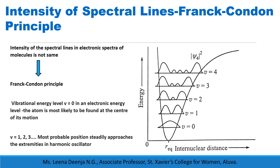Here is the Morse curve. We can see the probability of finding the atom in different vibrational energy levels. The vibrational energy levels are marked as V equal to 0, V equal to 1, V equal to 2, V equal to 3, and V equal to 4. The probability densities of finding the atom at a particular energy level are shown as modulus of psi squared versus internuclear distance. We can see that this probability gradually increases, reaches a maximum at the equilibrium position, then decreases.